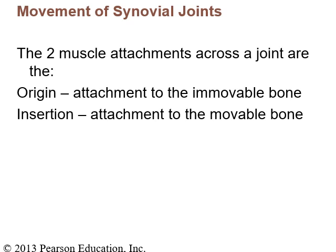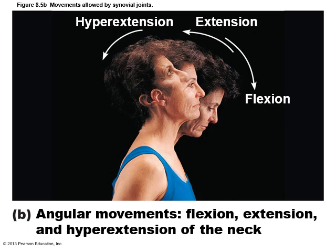There are three stabilizing features at synovial joints: the bone surfaces that come together, the associated ligaments, and the action of muscles and tendons. Muscles have two points of attachment — the origin, which is the attachment to the immovable bone, and the insertion. Many joints flex and extend, as shown here with flexion and extension at the neck. You can also hyperextend the joint, which could lead to injury.